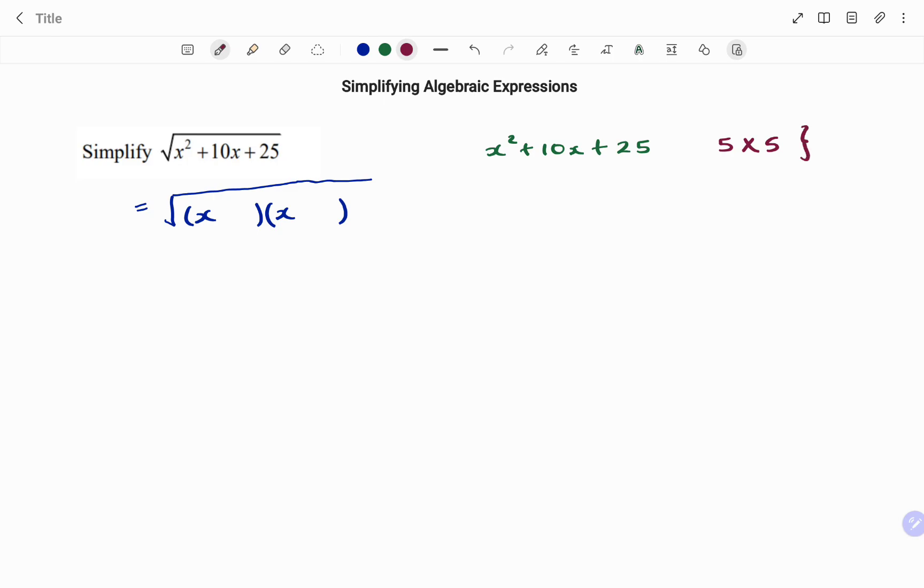Factors of 25 that will give me 10 is 5 times 5. If I add 5 plus 5, that will give me 10, which is the term I have in the middle. So if I expand, I have x squared plus 5x plus 5x plus 25.